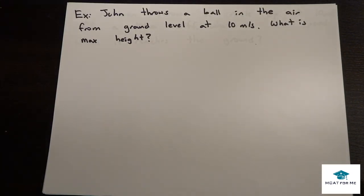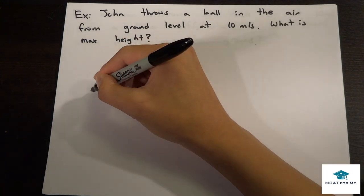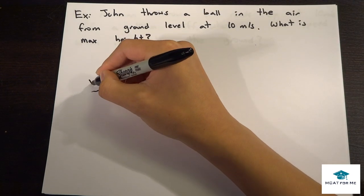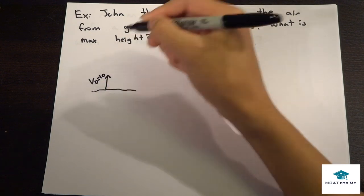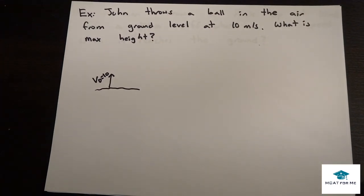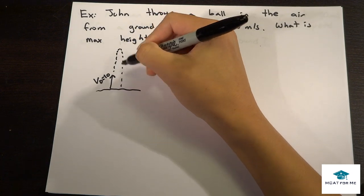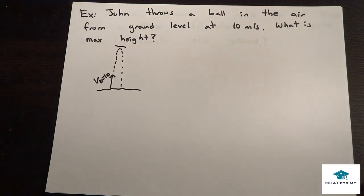We have a question here. It says John throws a ball in the air from ground level at 10 meters per second. What is its max height? Our first step was draw a picture. So he's on the ground and he throws a ball up in the air at V0 equals 10. It wants to find what is the max height, so it wants to find that point right there.